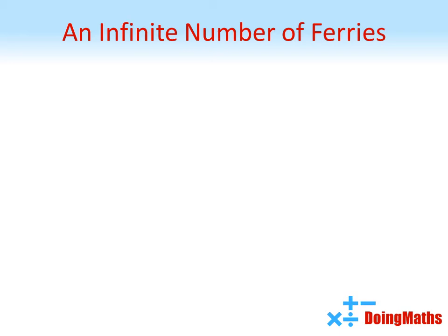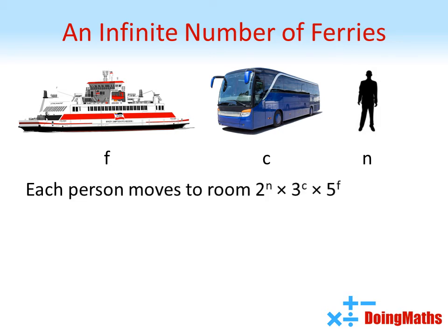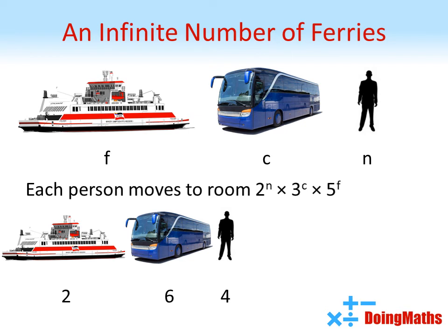Suppose further that our hotel is based on a river, and across the river comes an infinite number of ferries, each containing an infinite number of coaches, each with an infinite number of passengers. We can extend our method to accommodate all the new guests. Representing each ferry by F, along with C and N for coaches and seat numbers, we move each person to the room given by 2 to the power of N times 3 to the power of C times 5 to the power of F. For example, the fourth person on the sixth coach of the second ferry would go to room 2 to the power of 4 times 3 to the power of 6 times 5 squared, which is room 291,600.